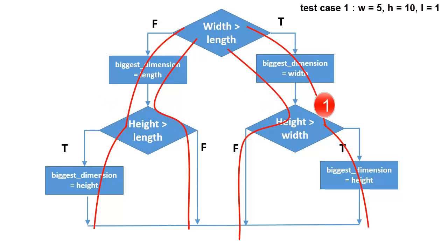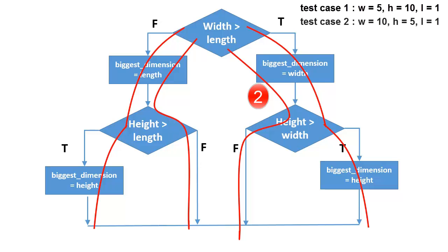First test case: we need width greater than length, and height greater than width. We can assume width equals 5, height equals 10, and length equals 1. Second test case: we need width greater than length and height greater than width equals false, meaning we want width greater than height. We can assume width equals 10, height equals 5, and length equals 1.